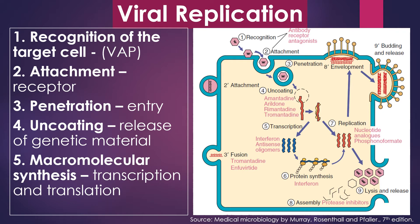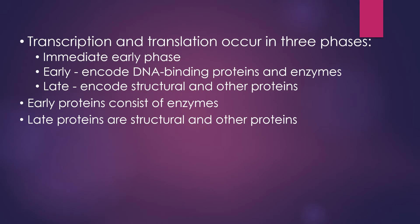Next is macromolecular synthesis. Once the genetic material of the virus reaches the target site, the genome must be directed to synthesize viral mRNA and protein, and then generates identical copies of virions. The transcription and translation of viral genetic material occurs in three phases: the immediate early phase, where immediate early proteins are produced which promote the takeover of the host cell; the early phase, where early genes encode DNA binding proteins and enzymes including DNA-dependent DNA polymerases; and the late phase, where late genes encode structural and other proteins including viral capsid and glycoproteins.